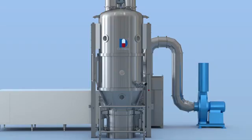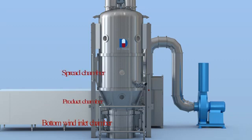Machine tower is designed in four sections including lower plenum duct, product container, expansion chamber, and top filter house.